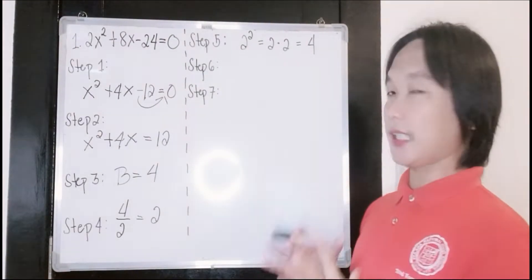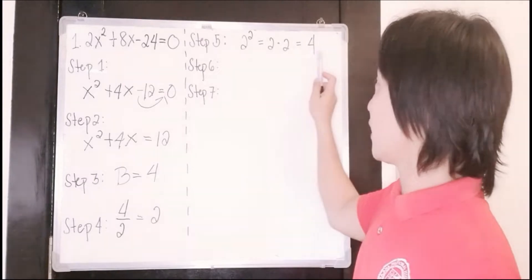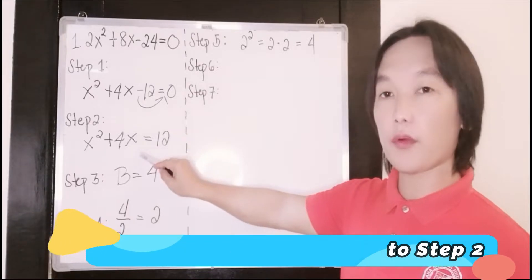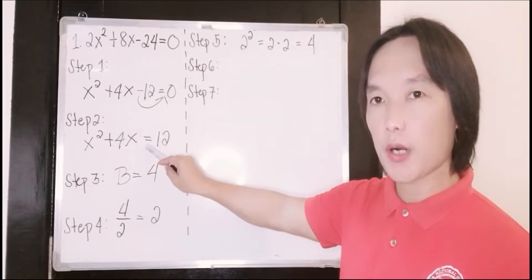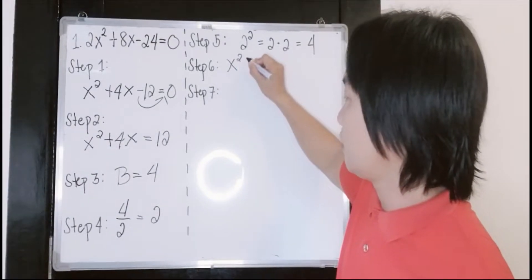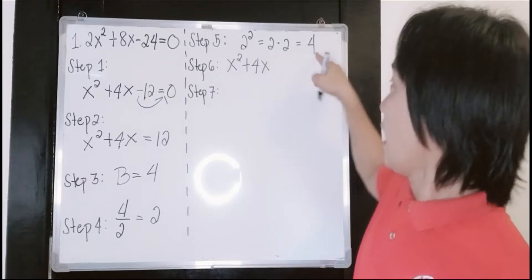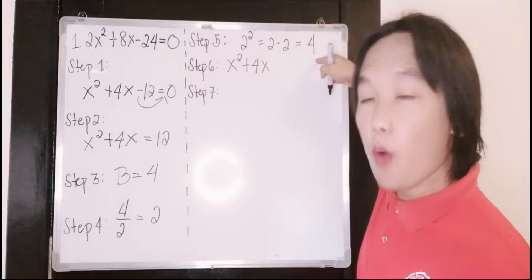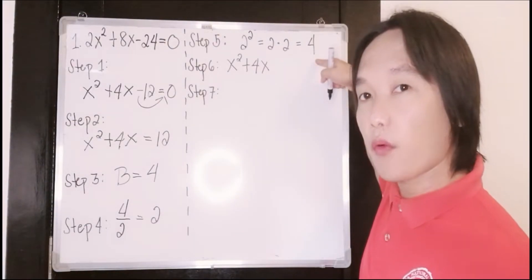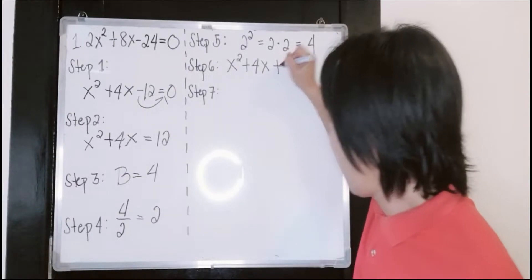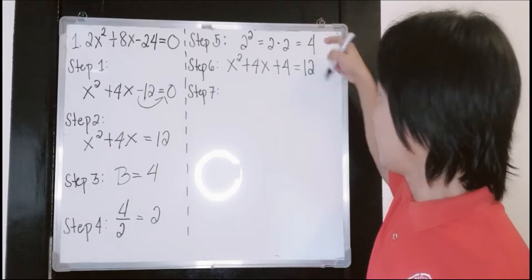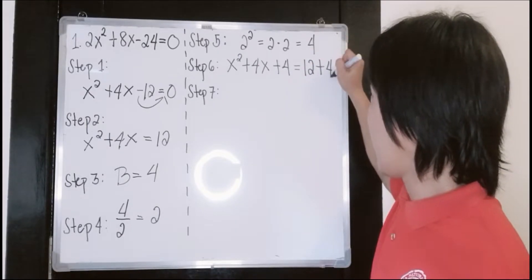Step number 6 is we are going to insert our answer from step number 5 into our equation from step number 2. So we will copy step number 2 first. Then we will add our value from step number 5 to the left and right side of our equation. So that will be plus 4 on the right, then copy 12, and you add 4 on the left side as well.